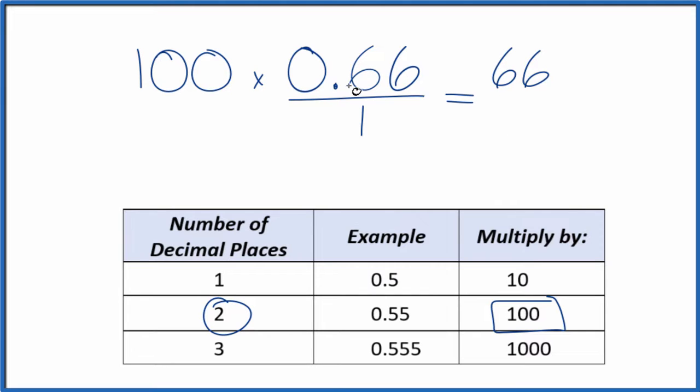But we can't just multiply the numerator by 100. We also have to multiply the denominator. That's because 100 divided by 100, that's 1. So we're multiplying this all by 1. It doesn't change the value, just the way it's represented.